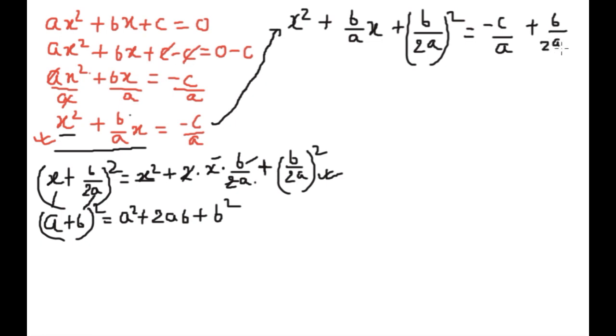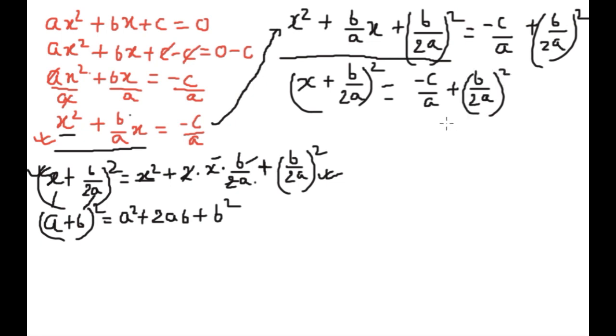(b/2a) whole square. Now this is equal to the formula (x + b/2a) whole square. Now we can write this (x + b/2a) whole square. It is equal to -c/a plus (b/2a) whole square. We can write this -c/a plus b^2/4a^2.